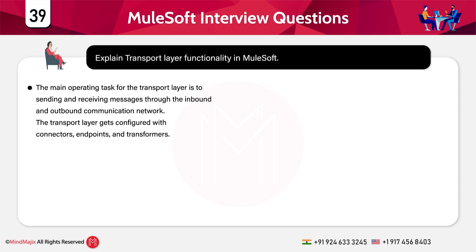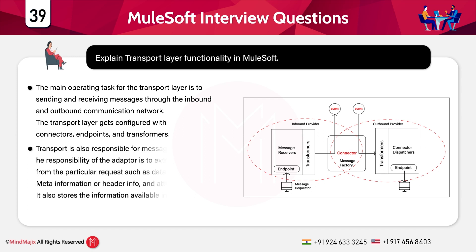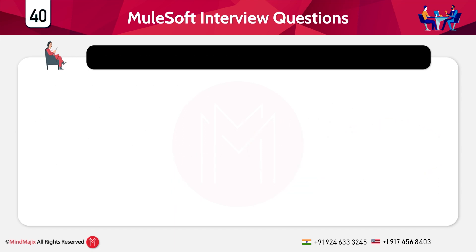Explain the transport layer functionality in MuleSoft. The main operating task for the transport layer is to send and receive messages through inbound and outbound communication networks. The transport layer gets configured with connectors, endpoints, and transformers. Transport is also responsible for the message adapter, whose responsibility is to extract all information from a particular request — such as data, meta information, headers, and attachments — and also stores the information available inside it.